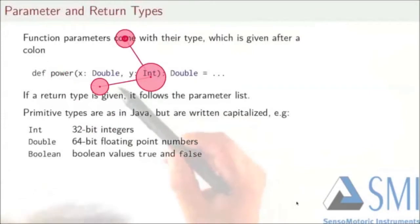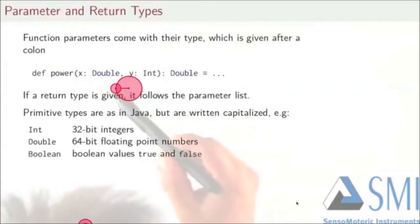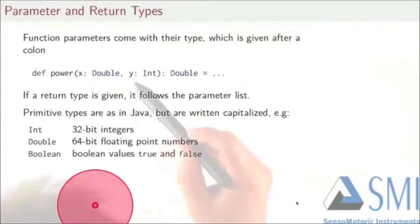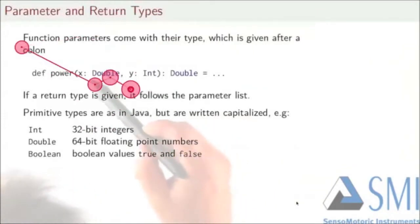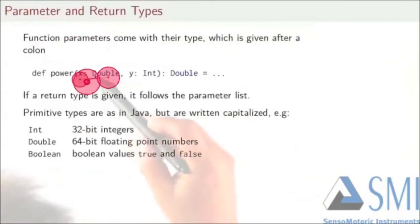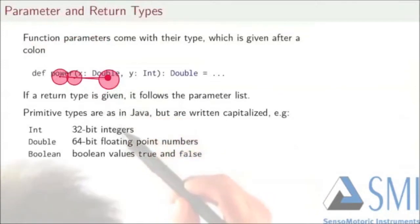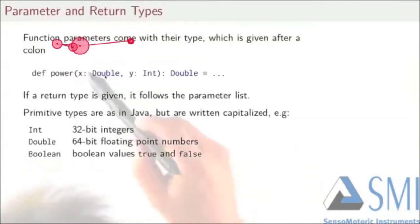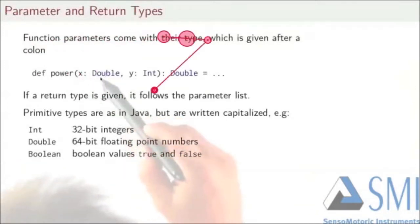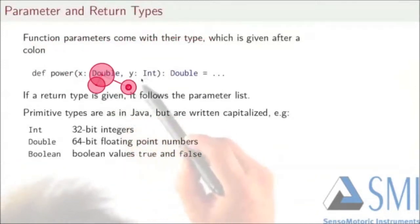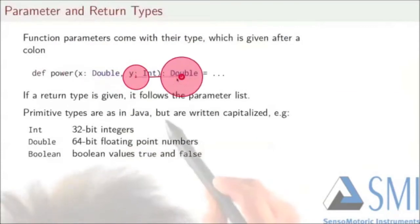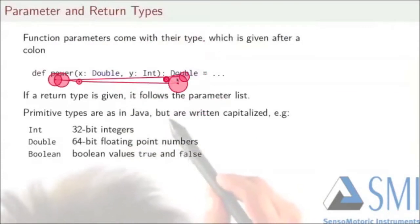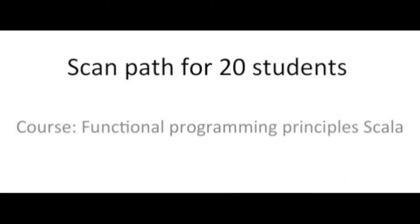You've seen in the last slide that function parameters come with their type. This type is given after the parameter name and a colon in Scala. So you would write x colon double, y colon int. You can also give the return type of a function that follows.